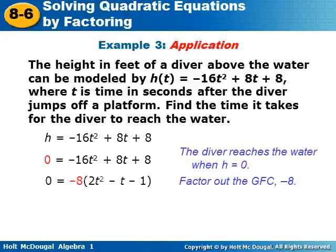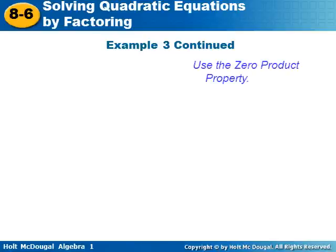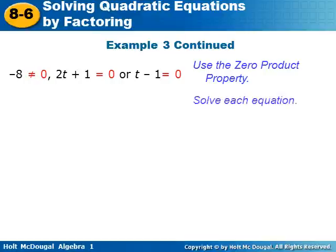We factor out the greatest common factor of negative eight, giving zero equals negative 8 times (2t² minus t minus 1). We then factor that trinomial using the X-box or chart method and get (2t plus 1) times (t minus 1). We apply the zero product property — negative eight cannot equal zero since there's no variable — so we set 2t plus 1 equals zero or t minus 1 equals zero, and solve for both.